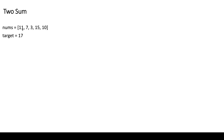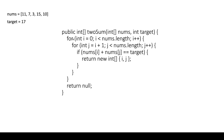Let me show you the code. I am iterating i from zero to the end of the array and j from i plus one to the end of the array. So initially i is at the first element and j moves across. We consider pairs like 11,7 then 11,3 then 11,15 and 11,10. At each point we check whether nums[i] plus nums[j] equals target, and if so we return i and j.